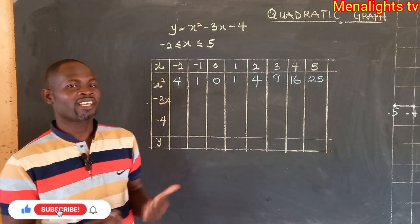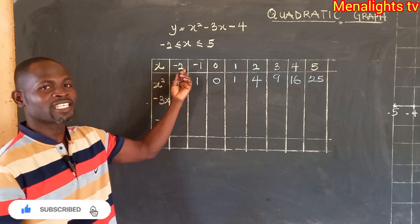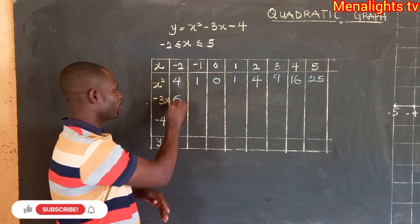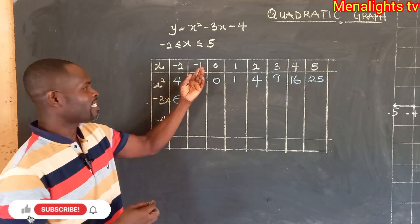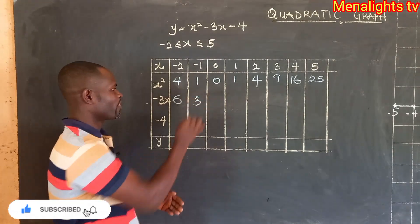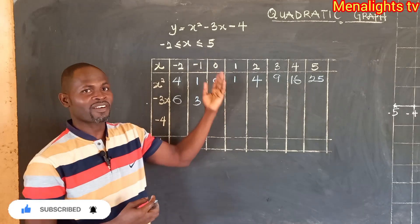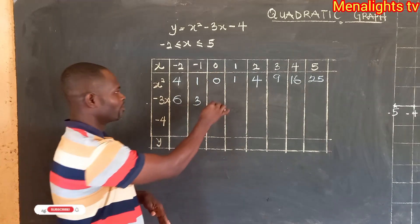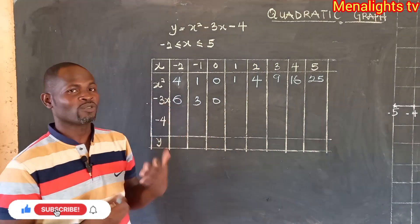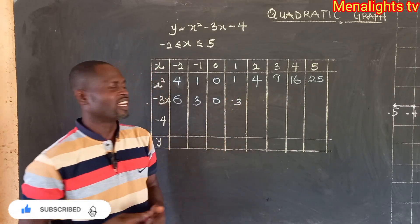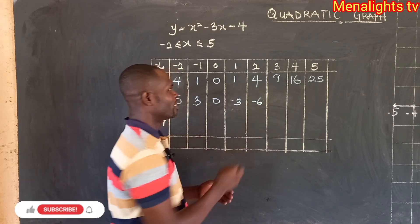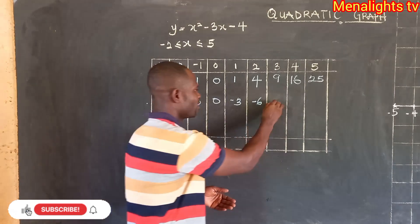Now we come to minus 3x. When x is negative 2, negative 2 times negative 3 gives us positive 6. If x is negative 1, negative 1 times negative 3 gives us positive 3. If x is equal to 0, 0 times negative 3 gives 0. If x is equal to 1, 1 times negative 3 gives us negative 3. Then 3 times negative 3 gives negative 9.